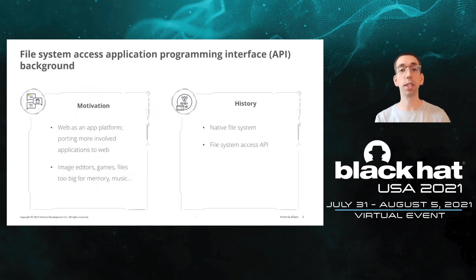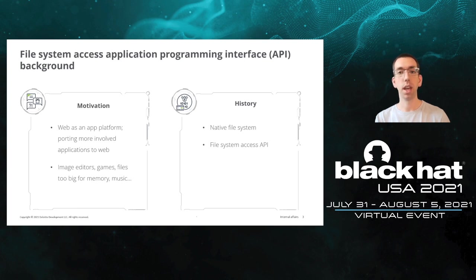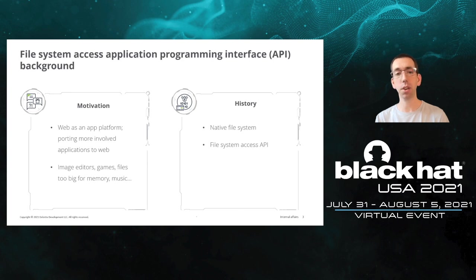So first, a little bit of background: what is the File System Access API? It is the latest in a long train of APIs and capabilities which have been added to web technologies to make web pages more feature-comparable with native desktop or mobile applications. Some of those added in prior years have been things like access to webcams and microphones provided to the JavaScript running within a web page — very useful for remote video conferencing without installing a program.